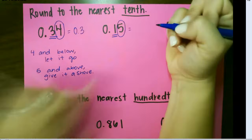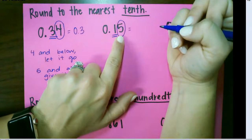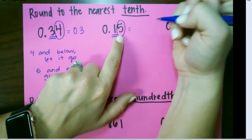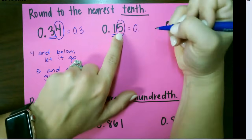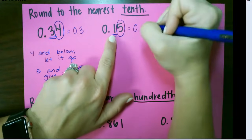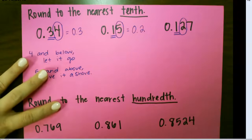For this one, again, the one is in the tenths place, but we need to look at the second number or the number in the hundredths place to figure out how to round this. Five and above, you're going to take this number and round it up. So that would be 0.2 or 0 and 2 tenths.